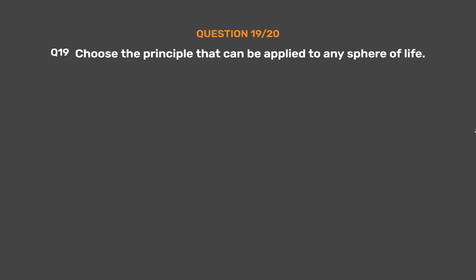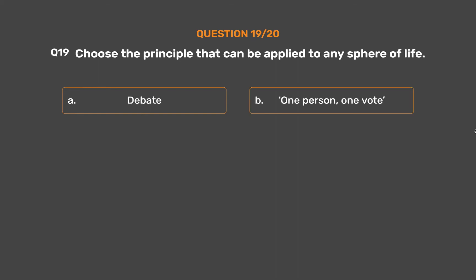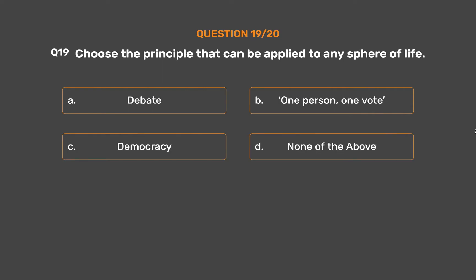Question number 19. Choose the principle that can be applied to any sphere of life. Option A: Debate. Option B: One person, one vote. Option C: Democracy. Option D: None of the above.